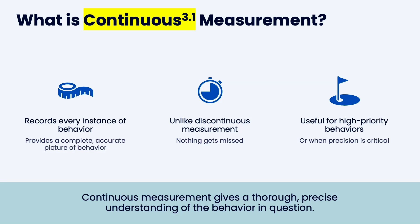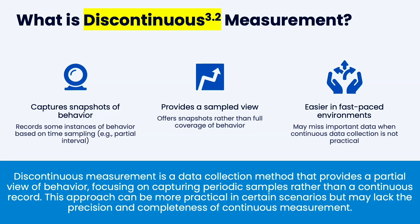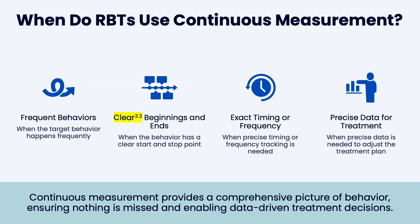We move to discontinuous when there are time constraints with the observer. If there are no time constraints, you always want to use continuous. Discontinuous measurement captures snapshots of behavior — there are interval recording systems where you look at sampled views of behavior and generate percentages. It's much easier to do in fast-paced environments.